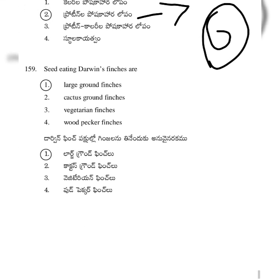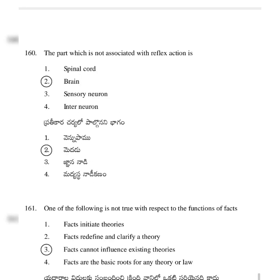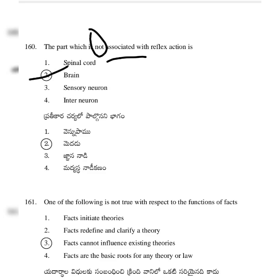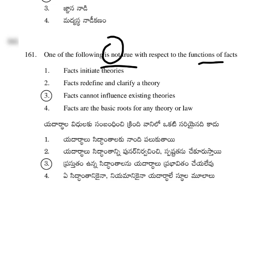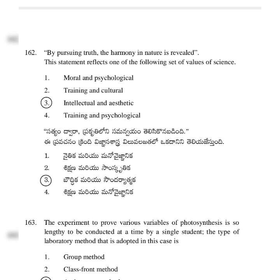Seed-eating Darwin's finches are option 1: large ground finches. The part not associated with reflex actions — option 2: brain. The brain does not participate in reflex actions.